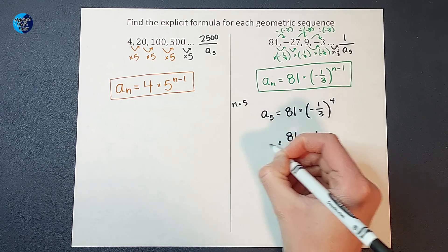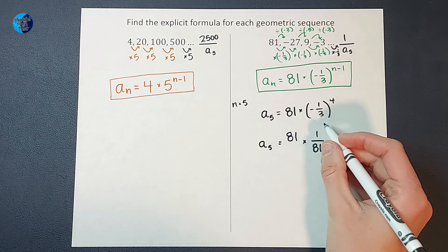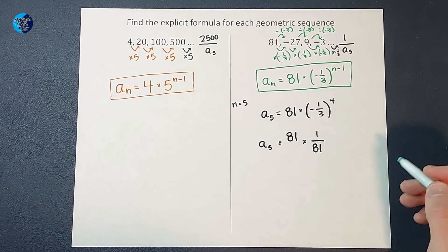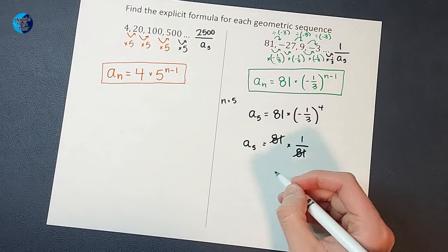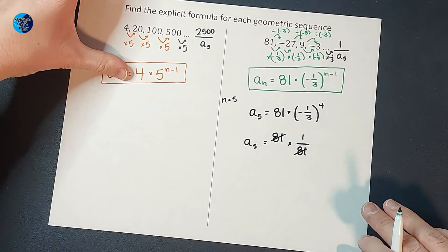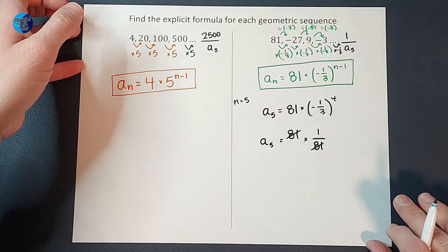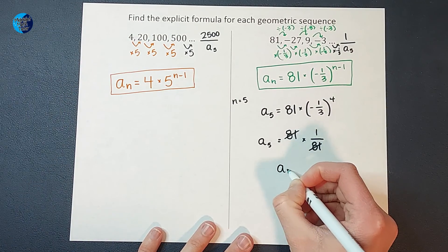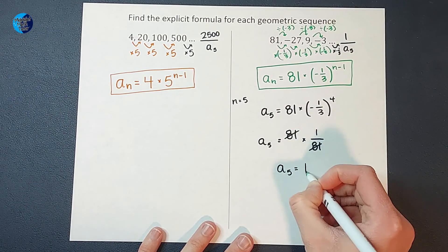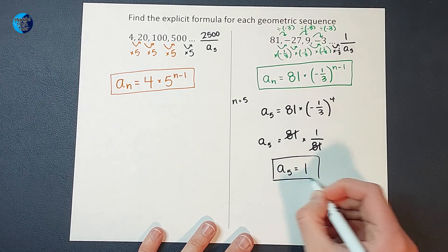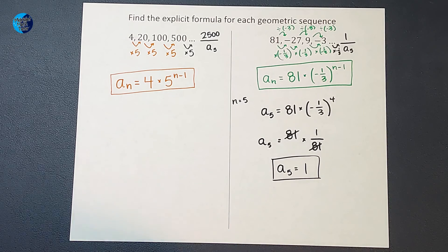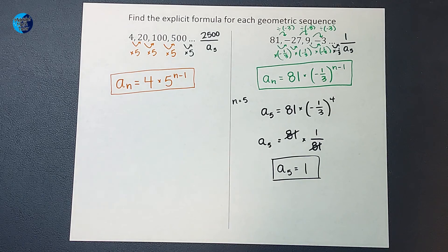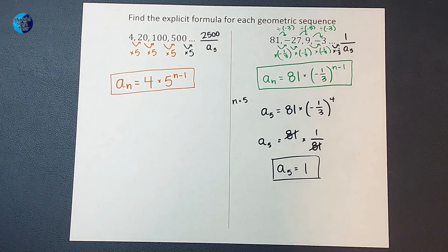Or if you wanted to do it on your calculator and get the decimal, that's totally fine. You'll end up with the same answer. So I end up with a sub 5 equals 81 times 1 over 81. And you probably remember what happens. These guys cancel and I end up with just 1. So I end up with a sub 5 equals 1. Hallelujah! So I'm feeling pretty confident that I could plug in whatever number I want for n and figure out that number in the sequence. All right. I hope this made sense. If you need some more videos, I will link that playlist for you. Thanks.